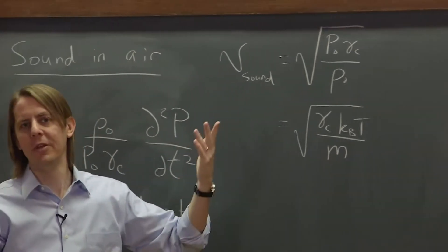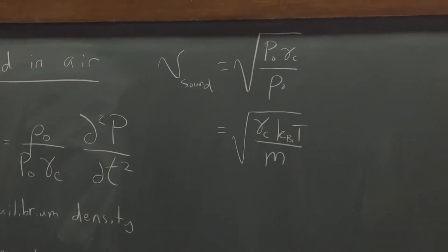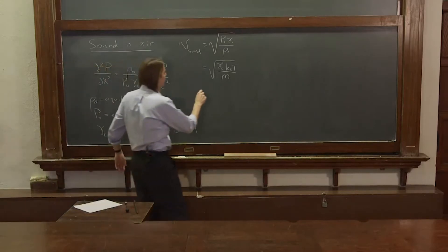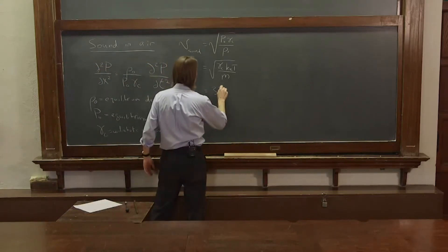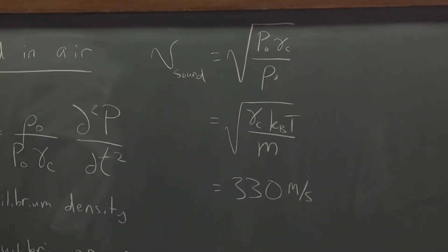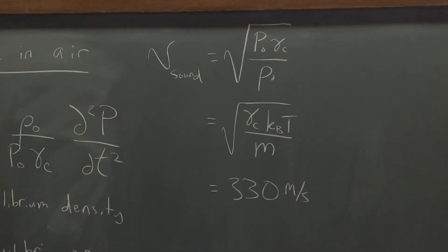So if the air is mostly nitrogen, you'd put the mass of an N₂ molecule. And if we solve this for typical conditions outside or inside, it's about 330 meters per second. So pretty fast, but not the speed of light fast.